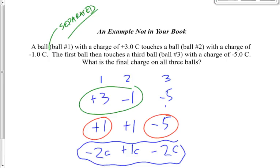Let's do a final check to make sure we haven't made a silly mistake. Find the total charge at each stage: +3 + (−1) + (−5) = −3. Then +1 + +1 + (−5) = −3. Then −2 + +1 + (−2) = −3. The total charge is the same at every stage, so the law of conservation of charge has been fulfilled. If your totals match at every stage, you've probably done it right.